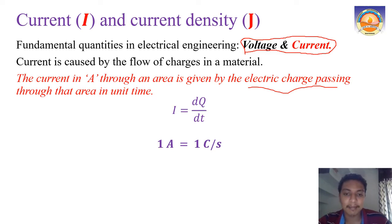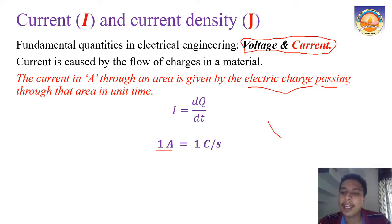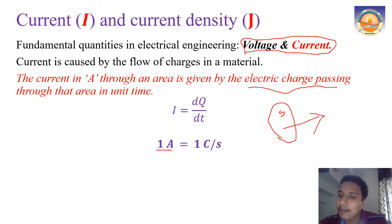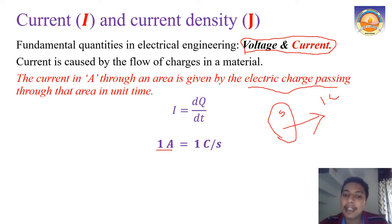When we say a current of one ampere is flowing through some area S, what we mean is that through that area, one coulomb of charge is being transferred per second. That is what is meant by one ampere of current.